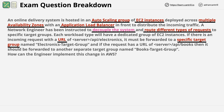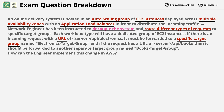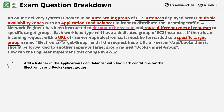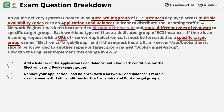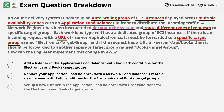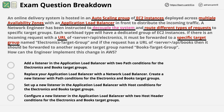Keep that in mind as we review the answers. The first answer is: add a listener in the application load balancer with two path conditions for the electronics and books target groups. The second is: replace your application load balancer with a network load balancer, and create a new listener with path conditions for the electronics and books target groups. The third is: set up a new listener in the application load balancer with host conditions for the electronics and books target groups. And the fourth is: create a new listener in the application load balancer with two host header conditions for the electronics and books target groups. We have four answers, and since the question doesn't specify how many to select, we default to picking one.